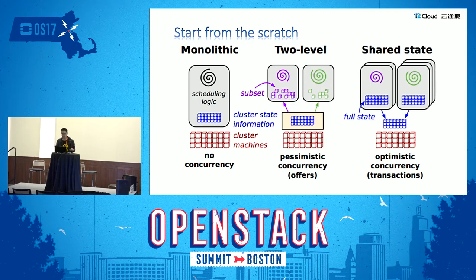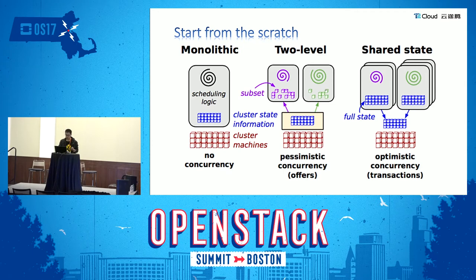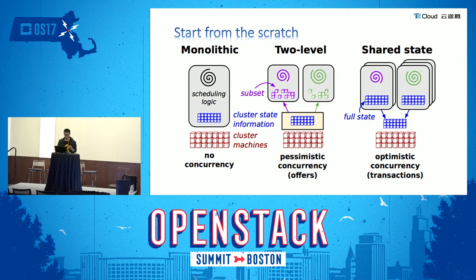I have to talk about the history at the beginning. Google is certainly a top star. There are three generations of resource schedulers in Google. The first and second generation they call Borg, and Mesos is the open-source implementation. The third generation they call Omega, and Kubernetes is the corresponding open-source version. Mesos is the heart of DCOS, and it is a two-level scheduling system. The master maintains the resources, and the agent requests resources and runs tasks.